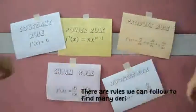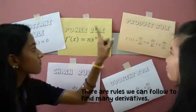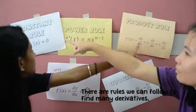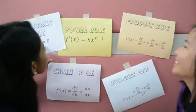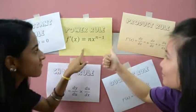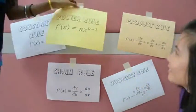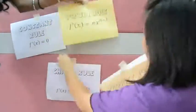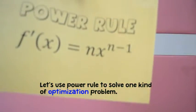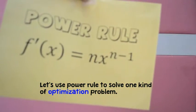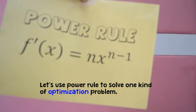There are rules we can follow to find many derivatives. Let's use the power rule to solve one kind of optimization problem.